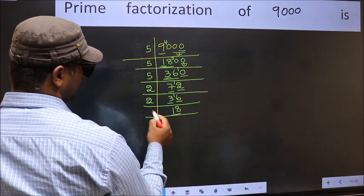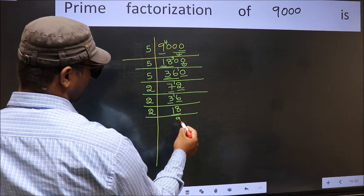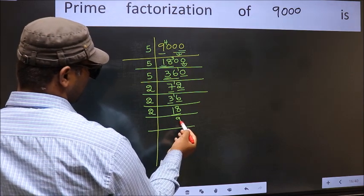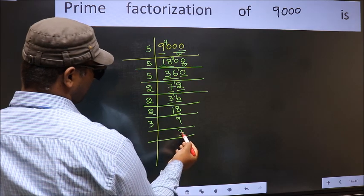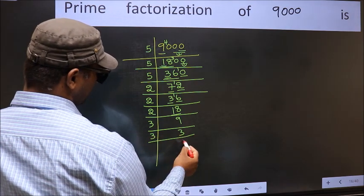Now we have 18. 18 is 2 times 9. Now we have 9. 9 is 3 times 3. Now we have 3. 3 is the prime number. So 3 times 1 is 3.